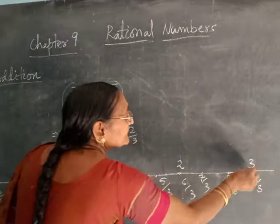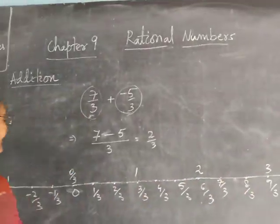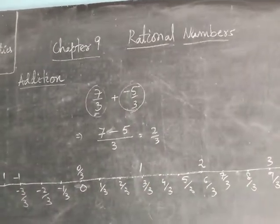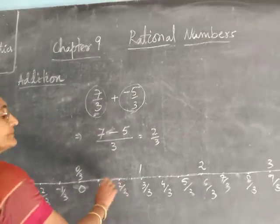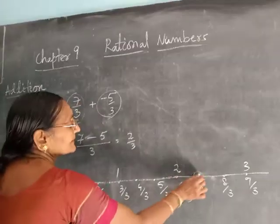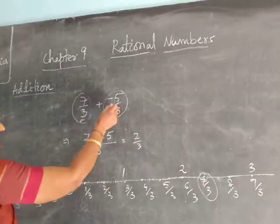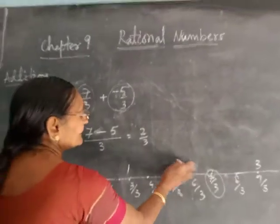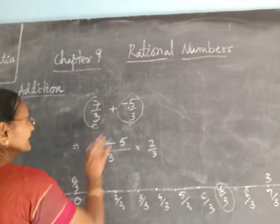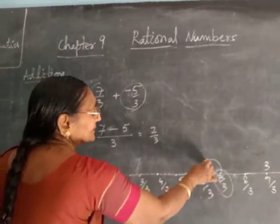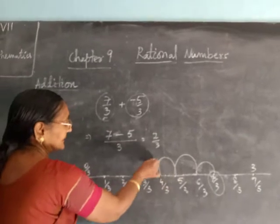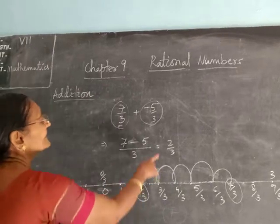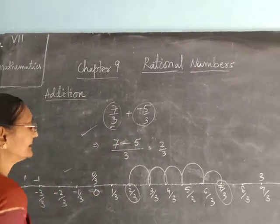9 by 3 means 3, so the range is between minus 1 and positive 3. Then how will you add? 7 by 3 is your starting number. Then you add minus 5 by 3. Minus means you have to move to the left side. You will subtract 5 steps: 1, 2, 3, 4, 5. Then this is the answer — same answer as before. This is one way, using the number line.